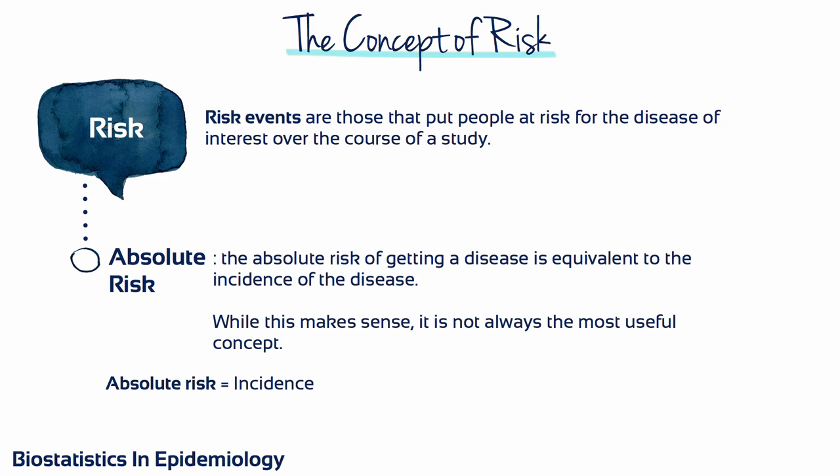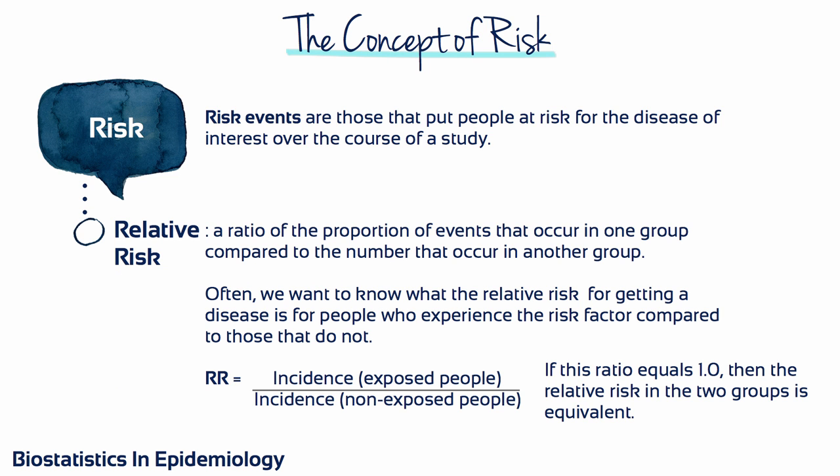That is, is there something about a particular group or situation that puts them at relatively greater risk than others? One example of a relative risk factor is age. You might want to know the relative risk of disease incidence in people over 75 years compared to those under 45. You might also calculate the relative risk ratio for broken legs in people who ski compared to those who do not.